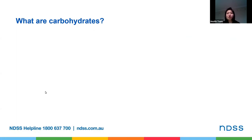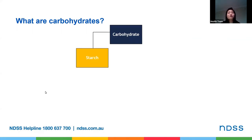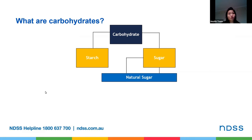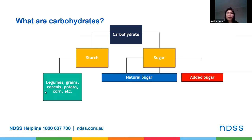Carbohydrates take two forms: starches and sugars. The sugars are then further broken down into natural sugar and added sugars. Starches are long chains of sugar glucose joined together. Starches occur naturally in a large range of foods, including nutrient-rich foods like starchy vegetables such as potato, sweet potato, corn, as well as legumes, cracked wheat, brown rice, pearl barley, quinoa, and oats. Starch will increase your blood glucose levels.